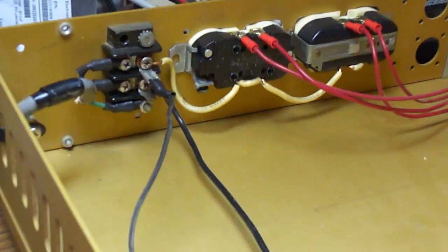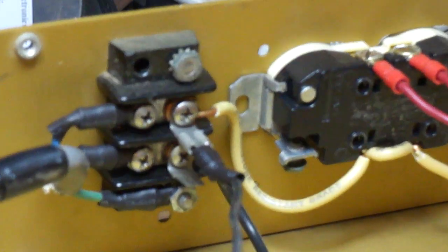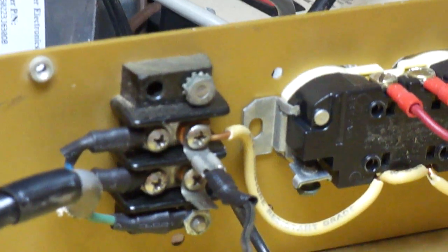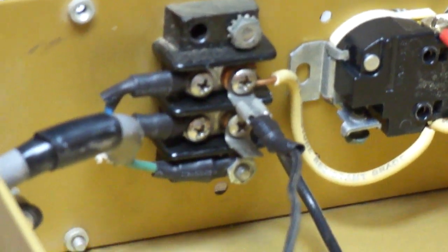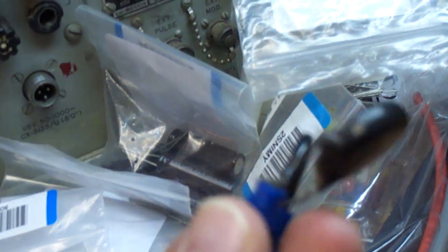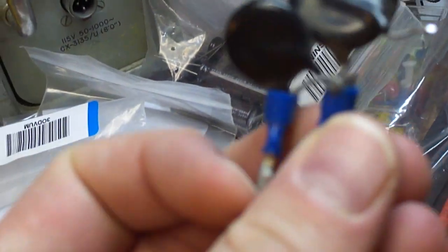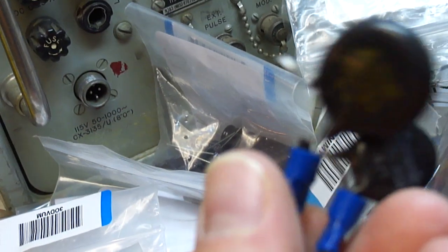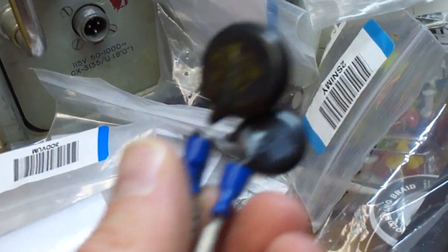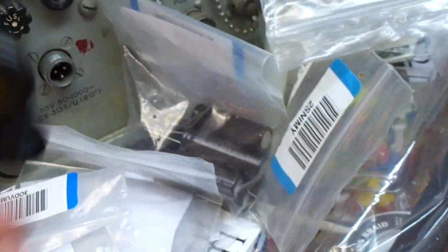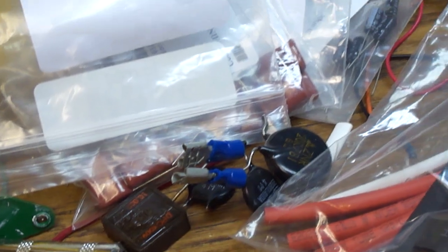This had some kind of crummy soldering on it. I went through and re-soldered just about everything. One thing it had - it had some MOVs on this terminal block. Here they are. I went ahead and disconnected them because they weren't attached to these terminals very good. And one of the terminals, the MOVs broke off. So I thought, well, I'll just remove them to be safe.